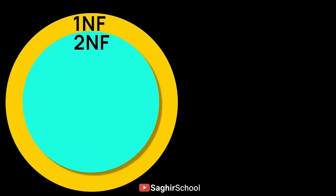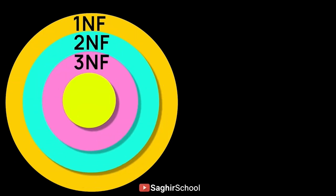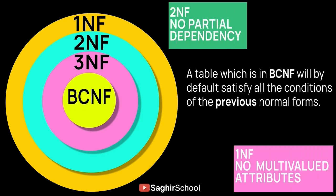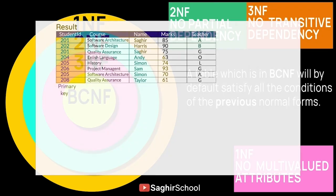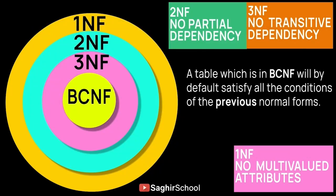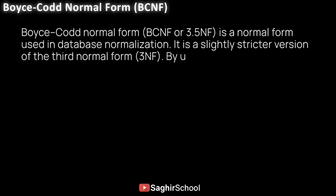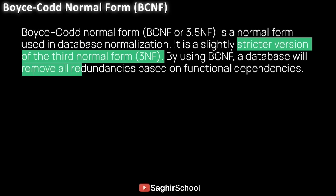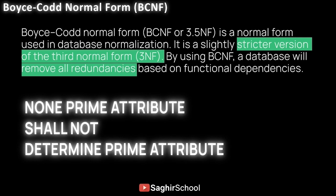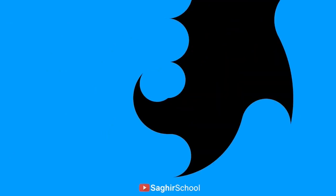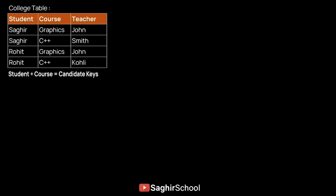To achieve BCNF, the table must first satisfy First, Second, and Third Normal Form. Rather than the tougher formal definition, a simple rule to remember is: a non-prime attribute shall not determine a prime attribute. Moving to the example, we have a College table with three attributes — Student, Course, and Teacher — where Student plus Course combine to form a candidate key.